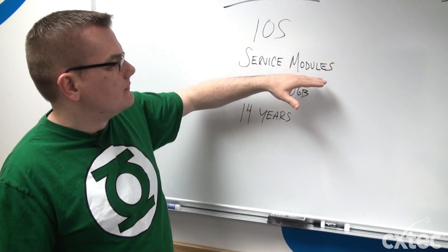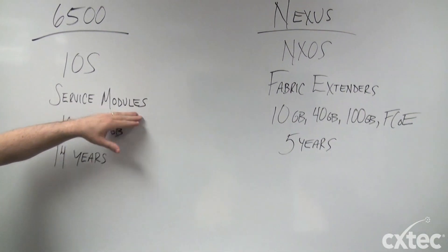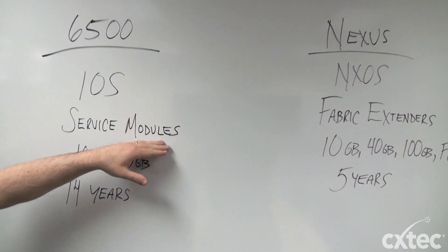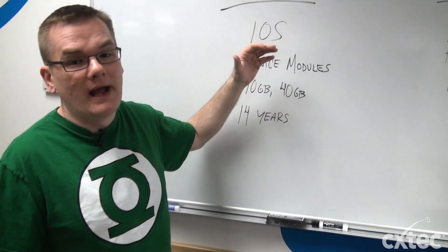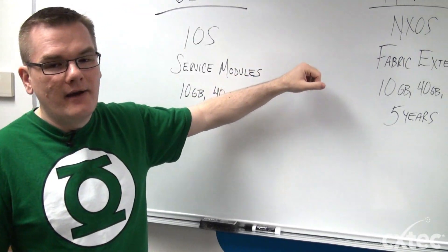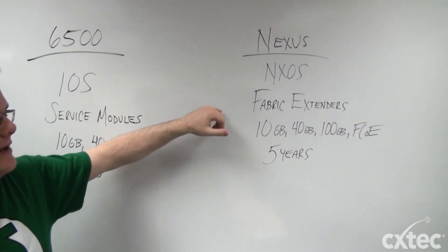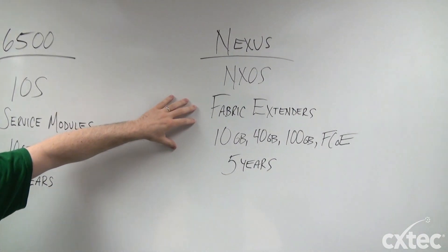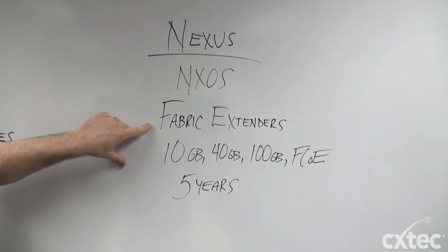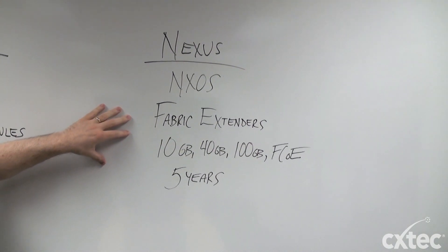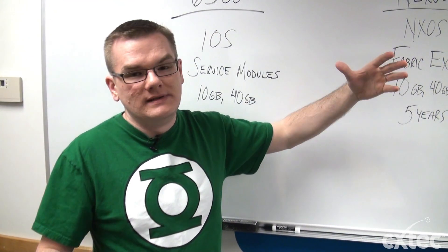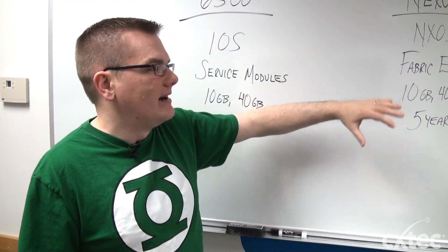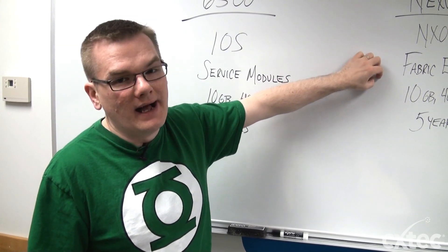Moving down the line: service modules versus fabric extenders. Service modules — things like the wireless service module and firewall services module — are things that we know and love in the 6500, having that modularity and the ability to support a wide variety of architectures. The Nexus doesn't have service module support as of yet, though I do believe that's something they're looking at possibly adding on at least a limited basis. What they do have is fabric extenders, which, while not a direct correlation, does give the Nexus the ability to expand across the data center and leverage a wide variety of interfaces at very high speeds.